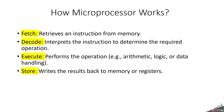How does a microprocessor basically work? It performs four operations: fetch, decode, execute, and store. Fetch means it retrieves an instruction from memory. Decode means it interprets the instruction to determine the required operation. Execute means it performs the operation, such as arithmetic, logic, or data handling. Finally, whatever the result of execution is, it gets written back to memory or a register.